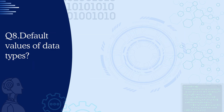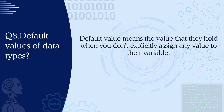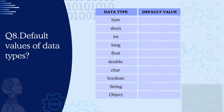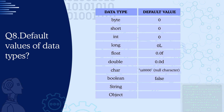Question 8: What are the default values of various data types? Default value means the value they hold when you don't explicitly assign any value to their variable. For byte, short, int — it's 0. For long, it's 0L. For float, it's 0.0f. For double, it's 0.0d. For char, it's a null character. For boolean, it's false. For a String or any object, it's null.